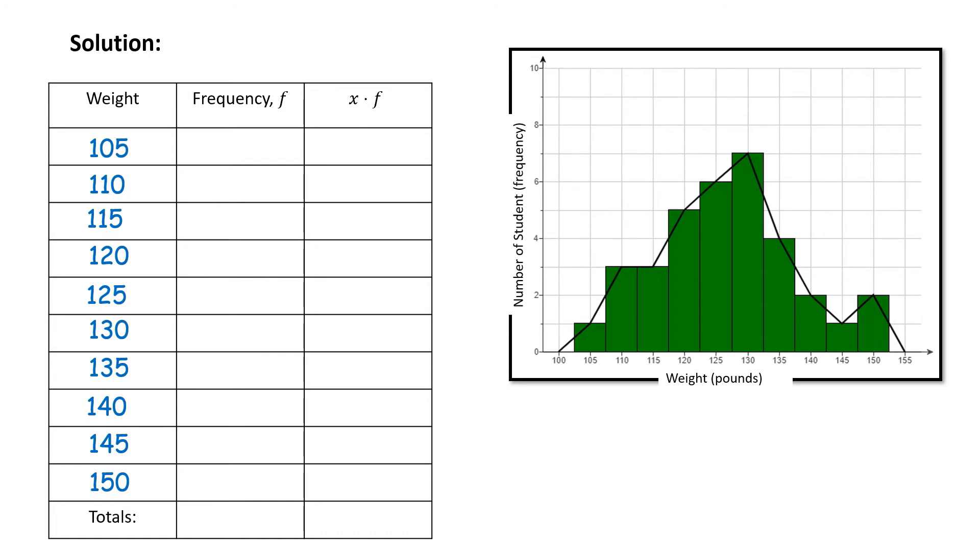Now, we're going to determine the frequency. The frequency is determined by the height of the bar at the weight. So at 105, the height of the bar is 1. At 110, we see that the height of the bar is 3. Just as for 115, the height of the bar is 3. At 120, we see that the height of the bar is 5. At 125, the height of the bar is 6. And at 130, the height of the bar is 7. Now the bars get shorter. At 135, the height of the bar is 4. At 140, the height of the bar is 2. At 145, the height of the bar is 1. And at 150, the height of the bar is 2.